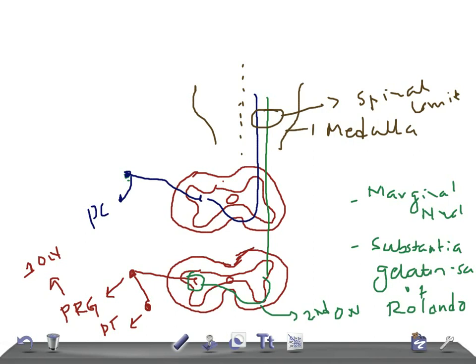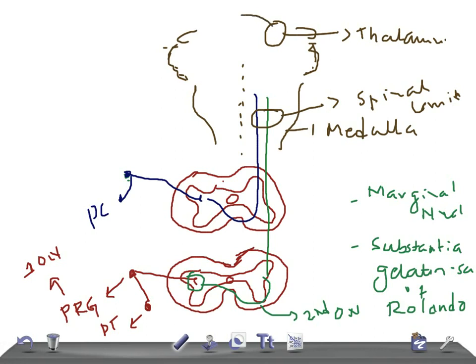Some of the fibers of the lateral spinothalamic tract form collaterals and reach the reticular formation of the brain stem. From the medulla we have the cerebellum, pons, midbrain, and then the thalamus. From the thalamus, the fibers go and end on the same side — these are the third order neurons, the thalamocortical fibers to the sensory cortex.